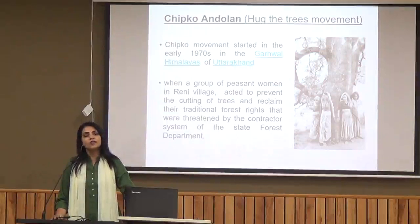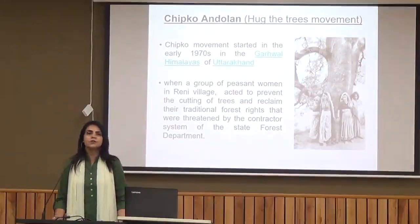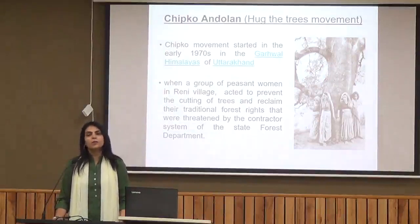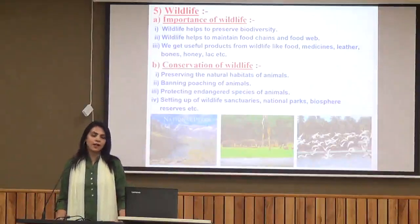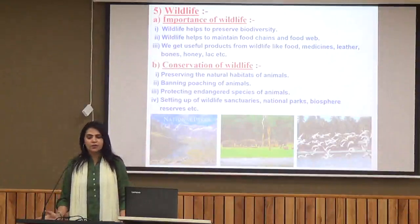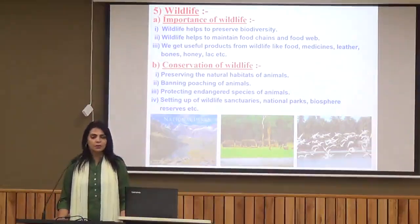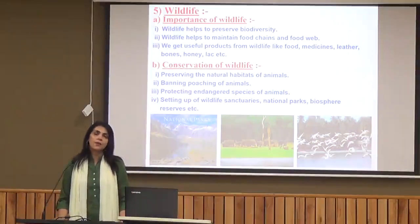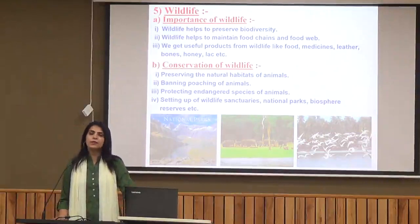This particular movement spread across the area, and there are many such examples in this chapter which prove that any natural resource — whether forest or water — can only be managed effectively by the local people. Regarding wildlife: it helps to preserve biodiversity and maintain food chains and food webs. We get useful products like food, medicine, leather, bones, honey, etc. We can conserve wildlife by preserving the natural habitat of animals, protecting endangered species, and setting up wildlife sanctuaries, national parks, and biosphere reserves. Conservation cannot be done by the government alone — it is only we who can join hands for the conservation of forests and wildlife.